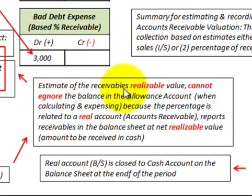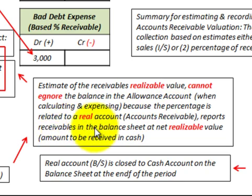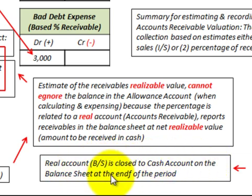To summarize the percentage of receivables method: you cannot ignore the balance in the allowance account when making your calculation, because the percentage is related to a real account — accounts receivable — which reports receivables on the balance sheet at net realizable value, the amount expected to be received in cash. Any existing balance must be included to determine the desired amount needed in the allowance account.